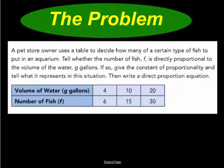The problem includes a table. A pet store owner uses a table to decide how many of a certain type of fish to put in an aquarium. Tell whether the number of fish F is directly proportional to the volume of the water G gallons. If so, give the constant of proportionality and tell what it represents in this situation. Then write a direct proportion equation.